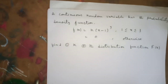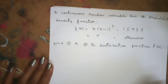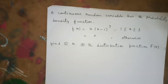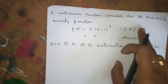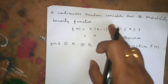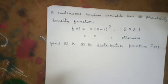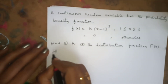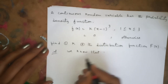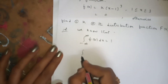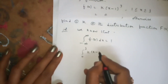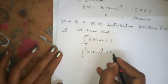Now for the second problem: a continuous random variable has a probability density function f(x) = k(x-1)³ for x between 1 and 3, and f(x) = 0 in all remaining cases. We need to find k and the distribution function F(x). Using the PDF property, the integral from 1 to 3 of k(x-1)³ dx equals 1.